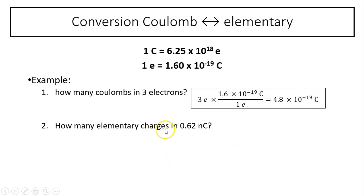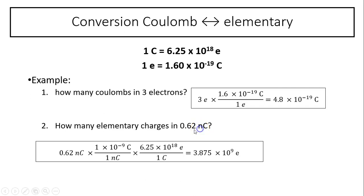To convert nanocoulombs to elementary charge, it's a two-step process. First, convert nanocoulombs to coulombs: nano means 10⁻⁹, so 1 nanocoulomb = 10⁻⁹ coulombs. Then convert coulombs to elementary charge: multiply by 6.25×10¹⁸ elementary charges per coulomb — the coulomb units cancel. For 0.62 nanocoulombs, the answer is 3.875×10⁹ elementary charges.